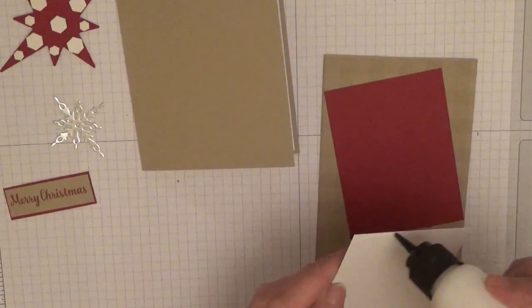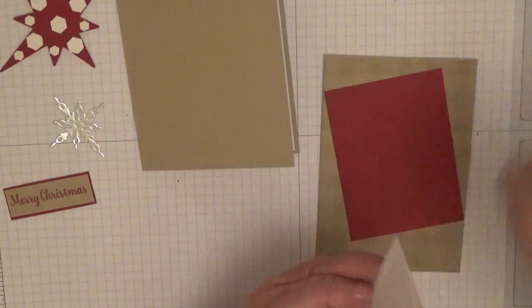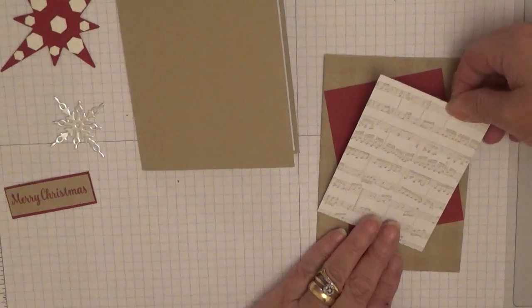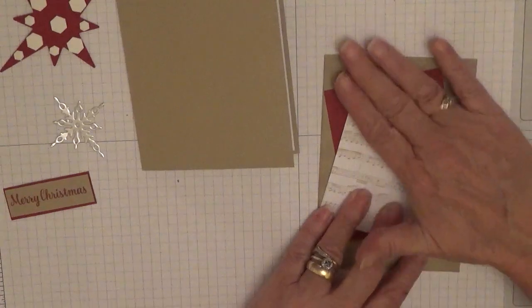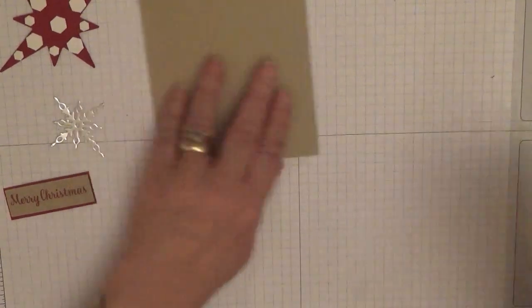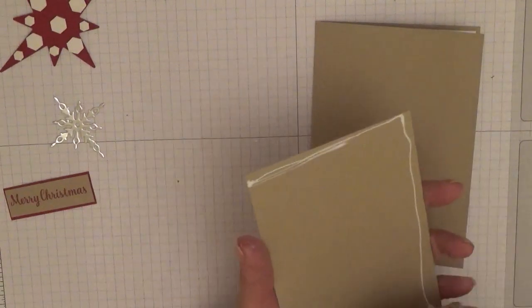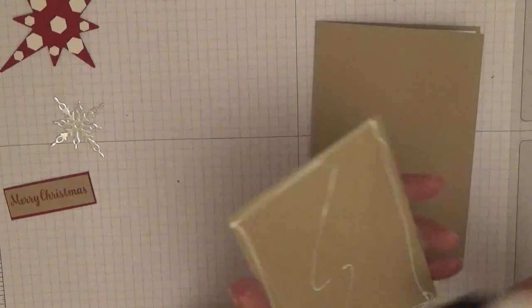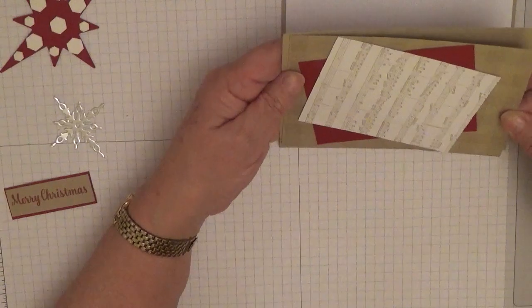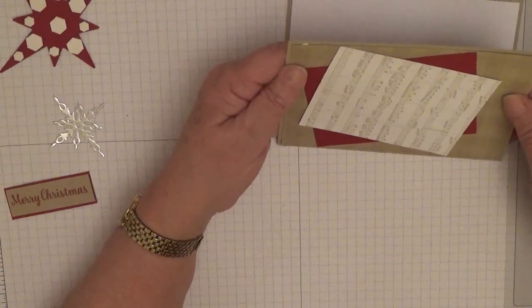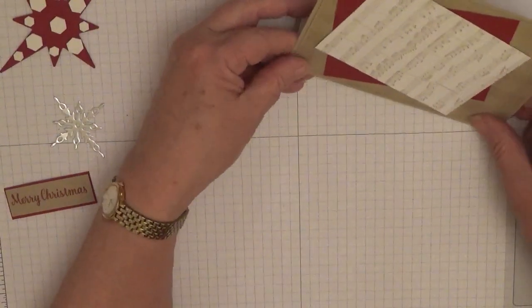And then stick the music sheet down. And then stick the whole lot on the card base. Doesn't actually stick out as much does it? Plaid bit. That's alright.